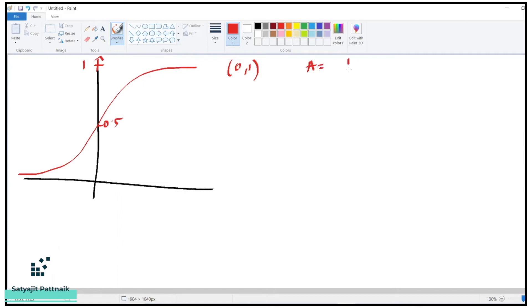And the formula of sigmoid function is a equals to 1 by 1 plus e to the power of minus x. So you can see that in this area, the gradient is high. If I just calculate the gradient, delta y is greater than delta x.